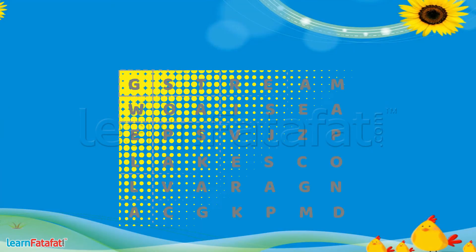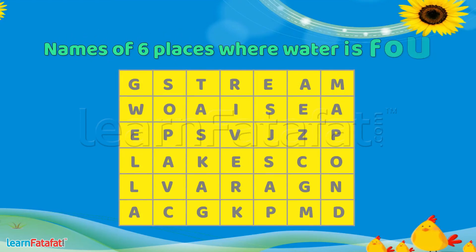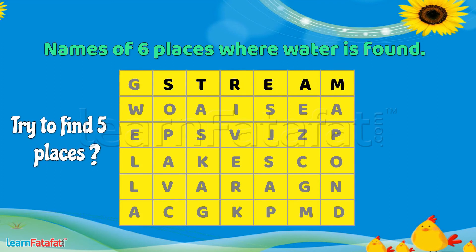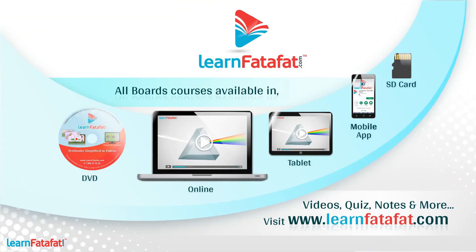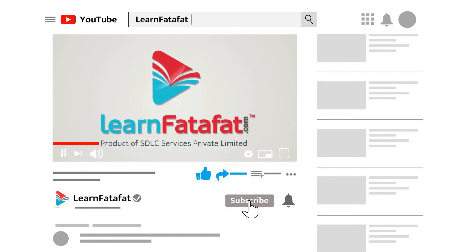Students, now look at this grid. There are the names of six places where water is found. Try to find them. Thanks for watching this video. Like, share and subscribe to learn4taffer.com and press the bell icon to never miss an update. Bye.